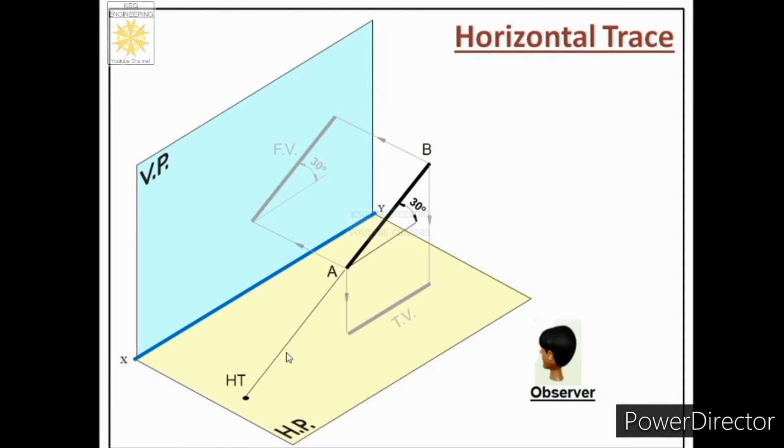Then what will happen? It will intersect somewhere on horizontal plane because it is inclined to horizontal plane. That intersection obtained on the horizontal plane after its extension will be called as horizontal trace of the line.